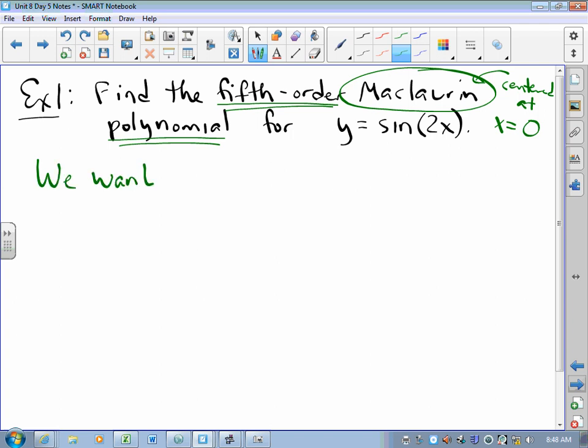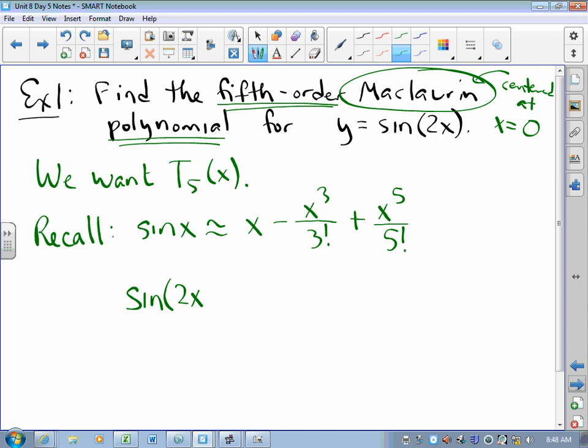We want the fifth-order Taylor polynomial centered at x = 0. Let's recall from yesterday: sin(x) was approximately x - x³/3! + x⁵/5!. And we could go on, but we just want the fifth-order. Well, if we know that, then shouldn't it be easy to find the sine of 2x?